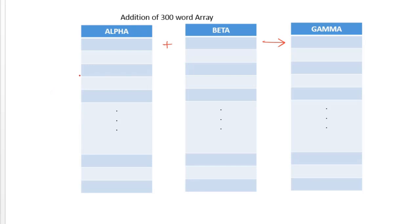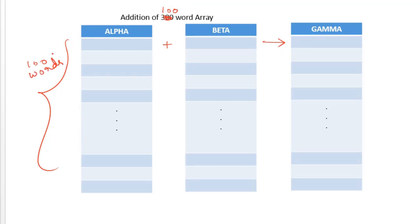The general idea of looping and indexing is the same as discussed in our previous example. But here the value in the index register must be incremented by 3 for each iteration, not by 1, because elements of the array are one word in size. Alpha, beta, and gamma are each arrays of 100 words, and one word is equal to 3 bytes.